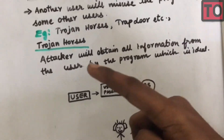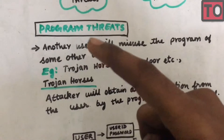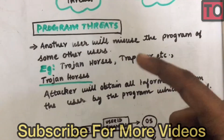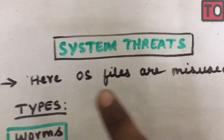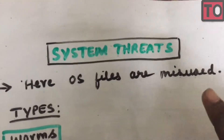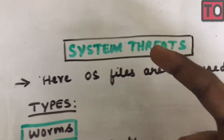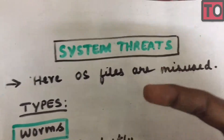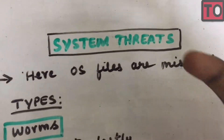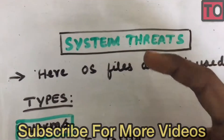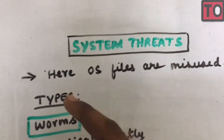This is the total for Program Threats. Now let's look at System Threats. In System Threats, OS files are misused — that is the problem. There are two types of System Threats.